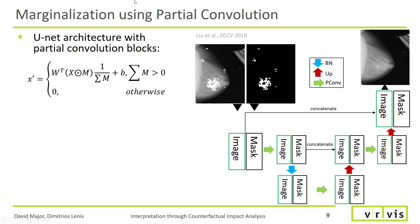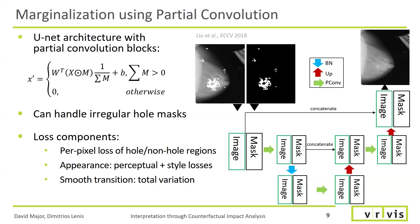With these features, we can handle irregular hole masks, which is important to us as irregular mask shapes are possible and likely during the optimization. The loss components of this framework are capable of emphasizing local context by per-pixel loss of hole and non-hole regions, while still considering global joint-region interaction by using appearance losses and total variation, thereby favoring a globally sound anatomy.